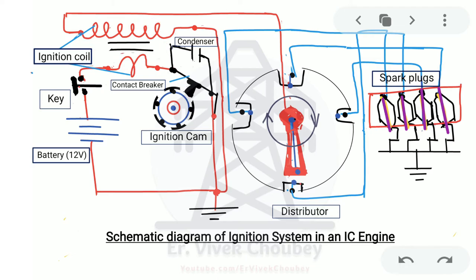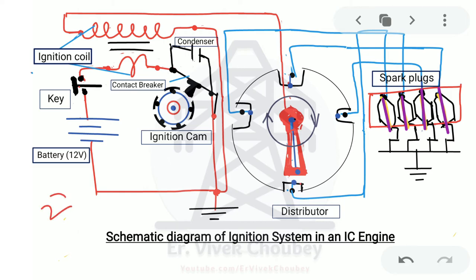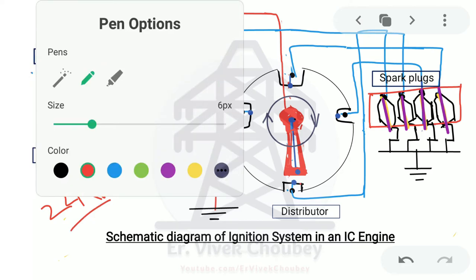The secondary coil has a greater number of turns, which means whatever voltage is generated in the primary, a multiplied amount of voltage will be generated by the secondary coil — this is by transformer action. Because the number of turns are greater, the voltage generated by the secondary coil is around 22 kilovolts, that is 22,000 volts.